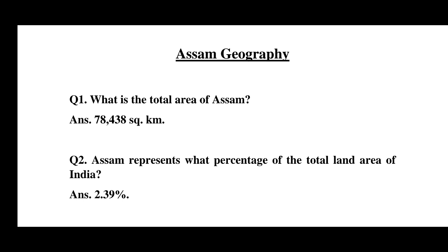The first question is: what is the total area of Assam? The answer is 78,438 square kilometers.